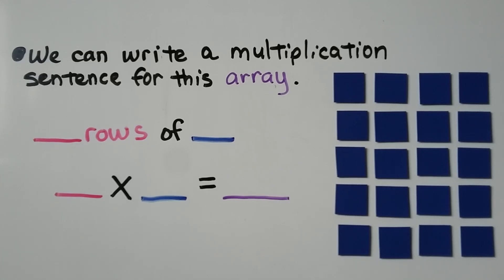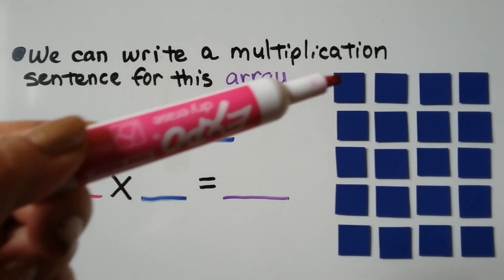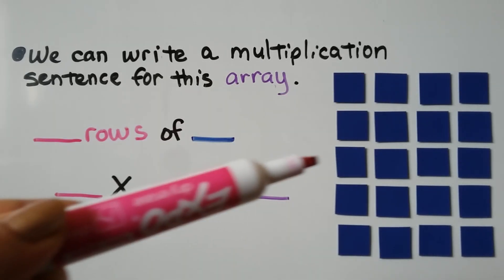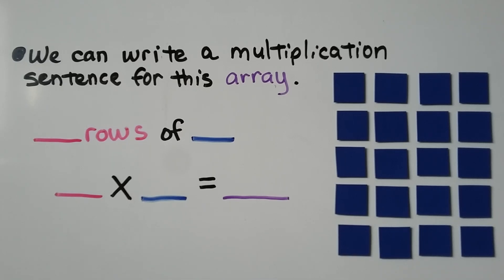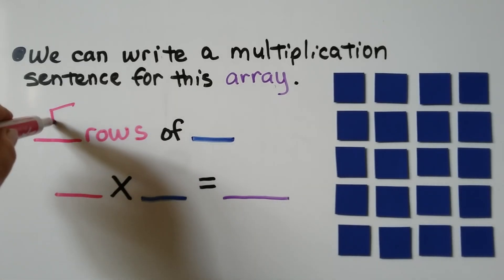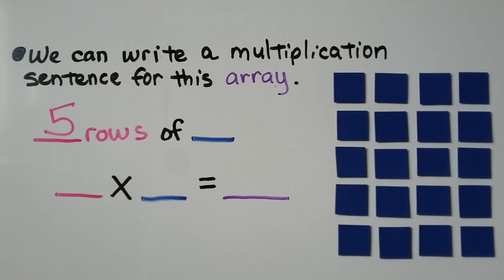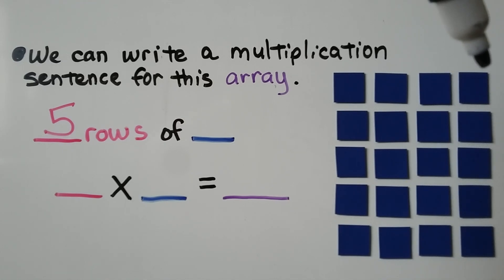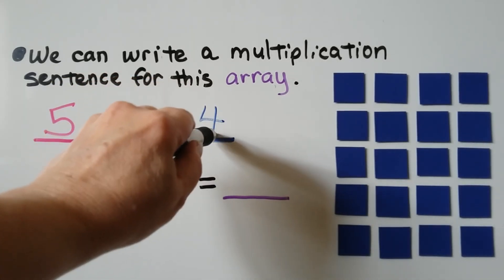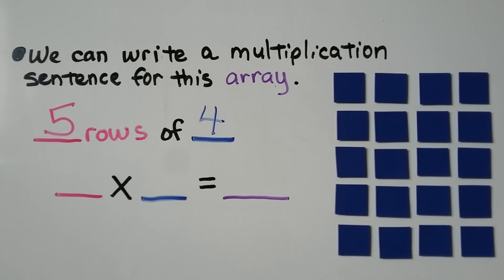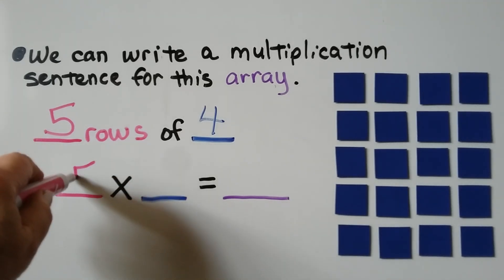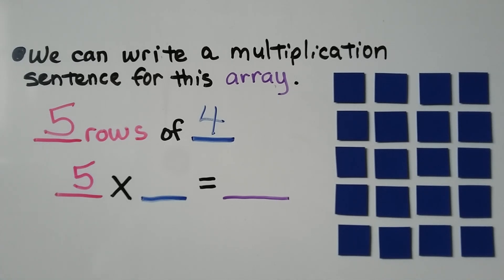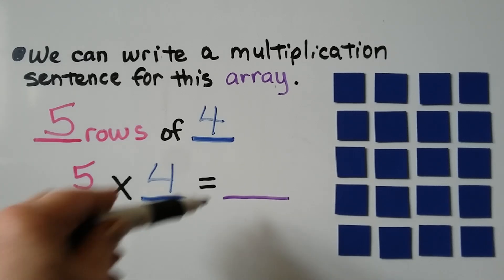We can write a multiplication sentence for this array. How many rows are there? There are five rows. And how many are in each row? There are four in each row. We have five rows of four — five times four is equal to 20.